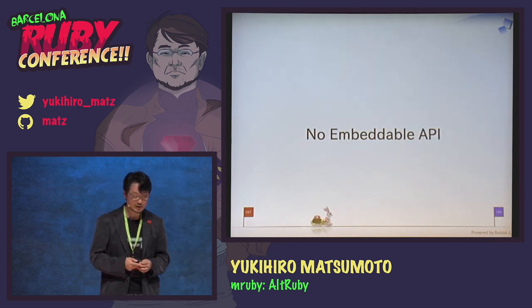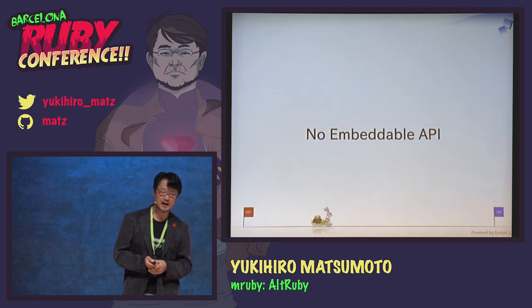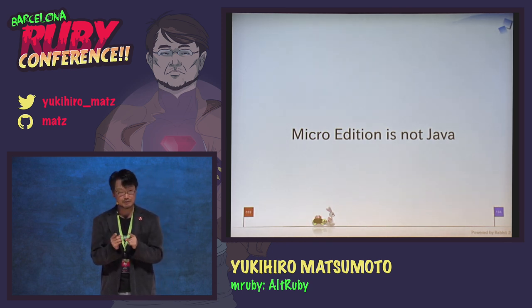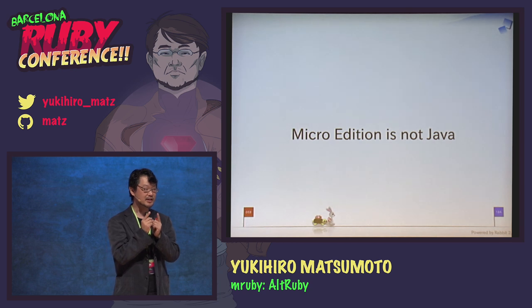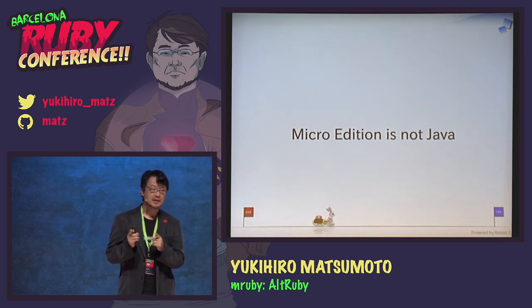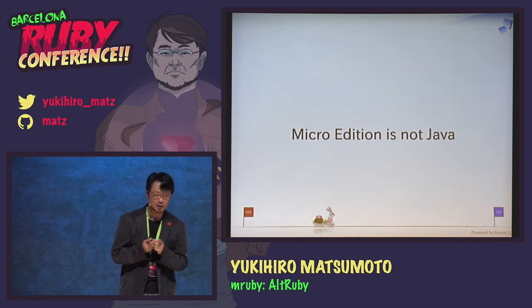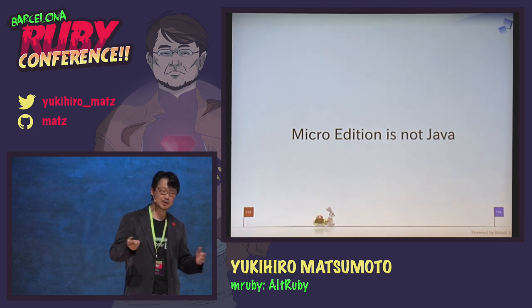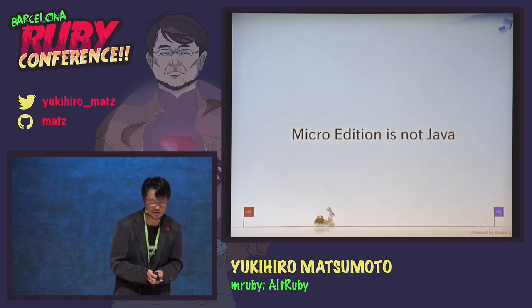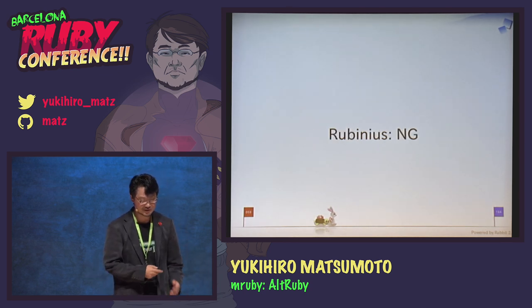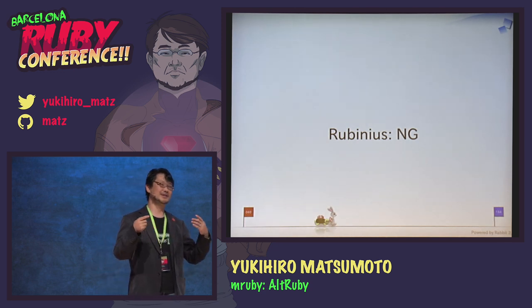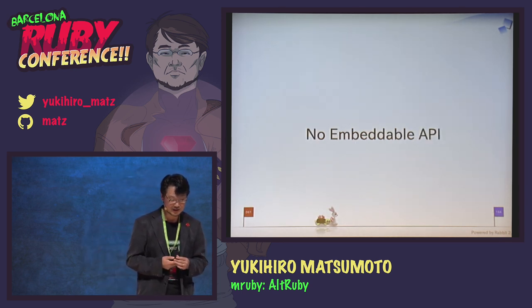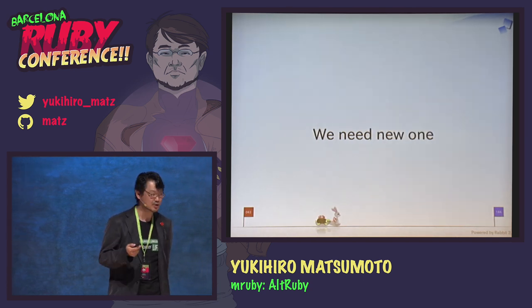Java Micro Edition exists for embedded systems, but it's too small API-wise — it's not really the Java we imagine, and it doesn't even have a proper garbage collector. Rubinius is also not suitable for embedded systems: it's bigger, consumes much memory, and has no embedding API. So we needed a new one. We got a grant from the Japanese government body named METI — the Ministry of Economy, Trade, and Industry of Japan.